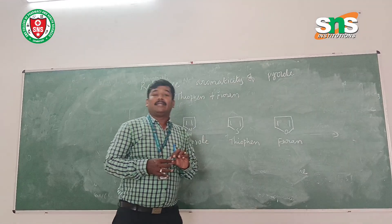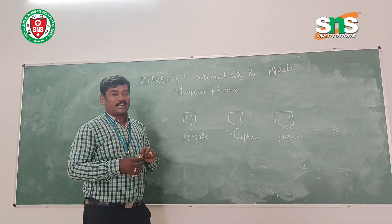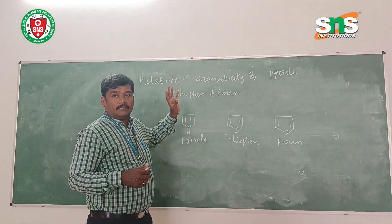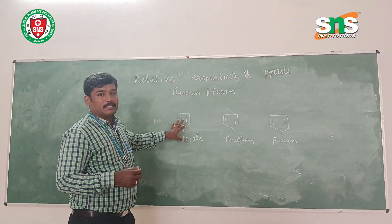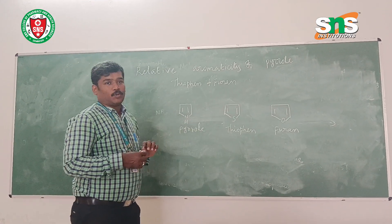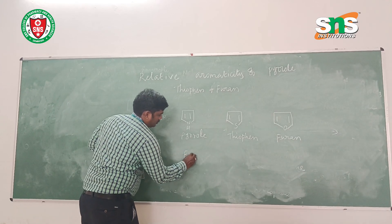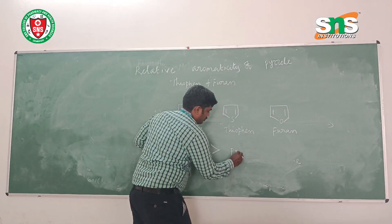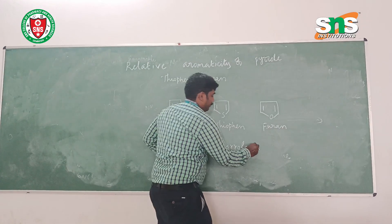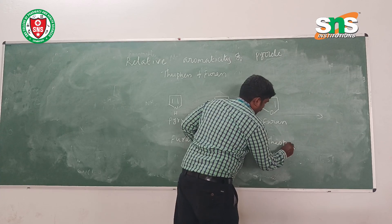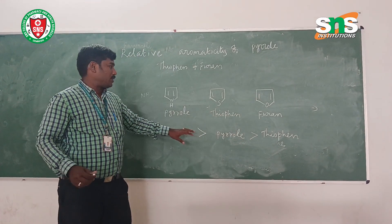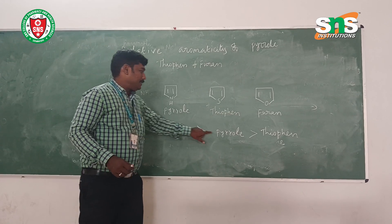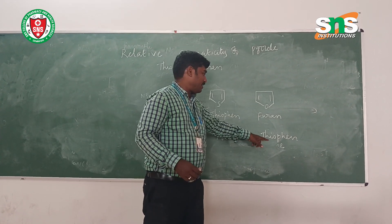Their aromaticity depends on the electronegativity of the heteroatom. So first we have to see the electronegativity of these heterocyclic compounds. The relative aromaticity depends on this electronegativity. Furan has higher electronegativity than pyrrole, and pyrrole has better electronegativity than thiophene.